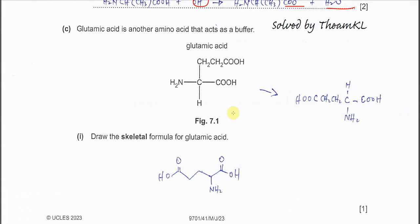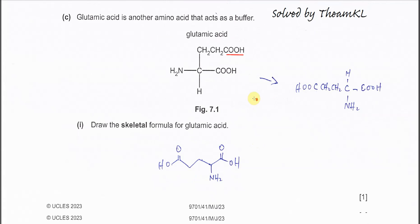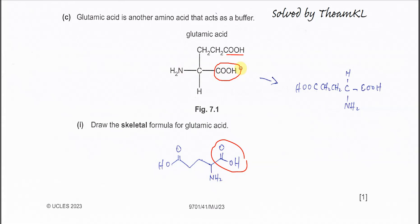Part C: glutamic acid is another amino acid that can act as a buffer. Glutamic acid has an extra COOH in its side chain. To draw the skeletal formula, follow the structure: COOH and NH2 at the alpha carbon, followed by the side chain CH2–CH2–COOH. This is the skeletal formula.